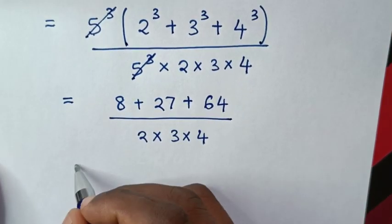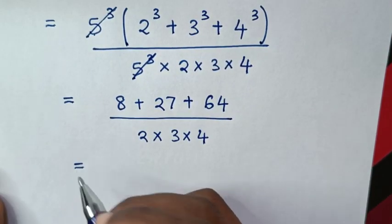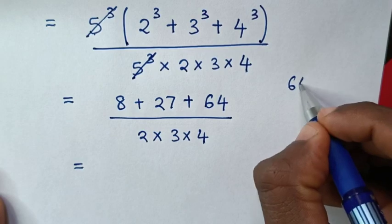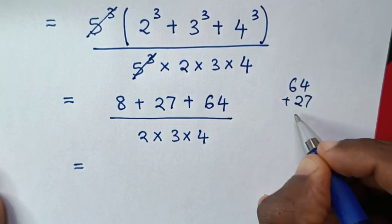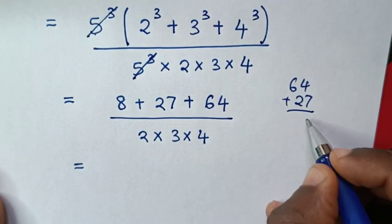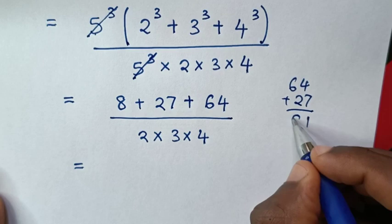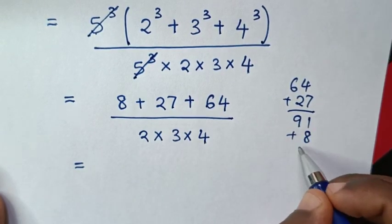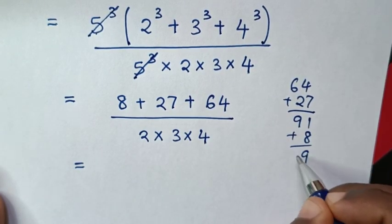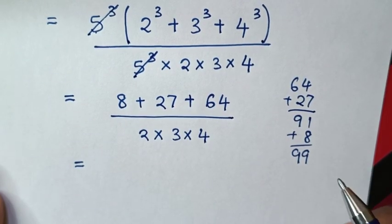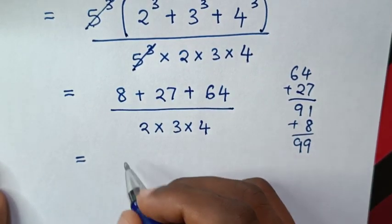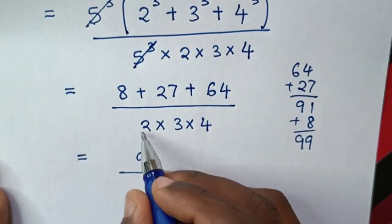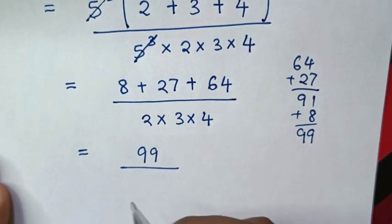Then it will be equal to the sum: 64 plus 27 plus 8. 4 plus 7 is 11, 8 plus 1 is 9, then plus 8 gives 99. So from the numerator the sum is 99, over 2 times 3 times 4.